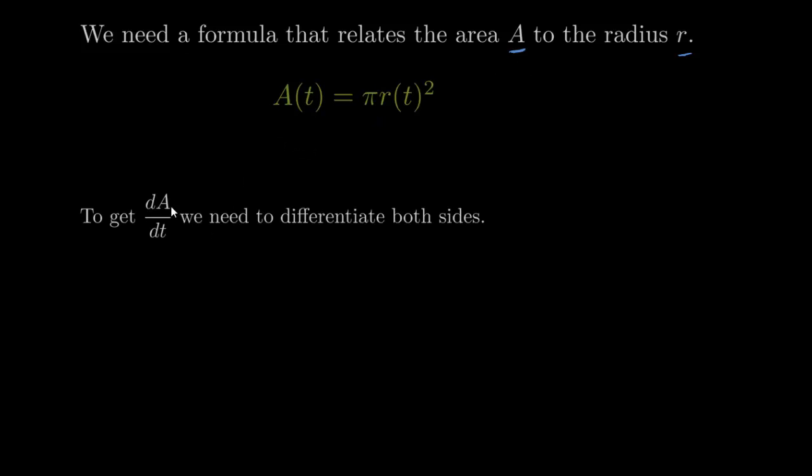So the next step is to get dA/dt, we need to differentiate both sides. So we're going to be doing something like this. d/dt of that, and then d/dt of this side as well. So what happens when you differentiate A(t) with respect to T? Well, you're going to get dA/dt. Now what happens when you differentiate πr²? Now when you differentiate, you still have a power rule, you're going to bring it down.